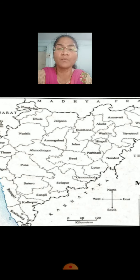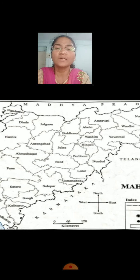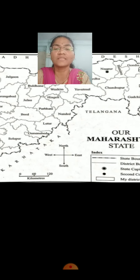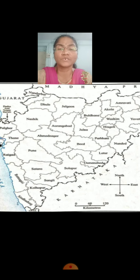Everybody knows that a state is composed of several districts, so these are districts. Here at the upper side is Nagpur — can you see? Nagpur is the second capital of Maharashtra. I hope everybody is clear about this. If I ask you, what are the neighboring states of Maharashtra? The neighboring states are Karnataka, Telangana, Chhattisgarh, Madhya Pradesh and Gujarat. These are the neighboring states of Maharashtra.